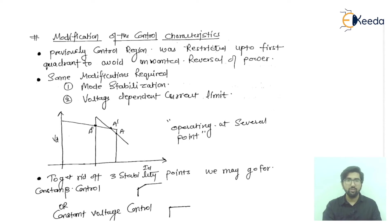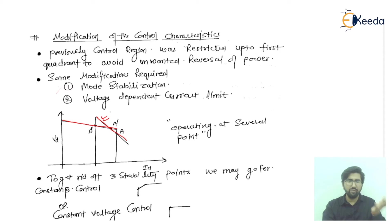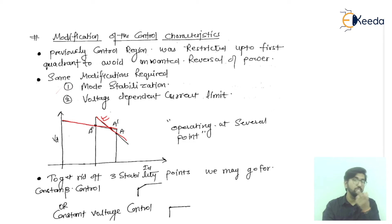Now we will talk about the modifications of the control characteristics and why the modification is required. Looking at this diagram, this is a rectifier slope — the characteristic for the rectifier — and this is for the inverter. Earlier we discussed the slope was higher for the rectifier and less slope for the inverter.